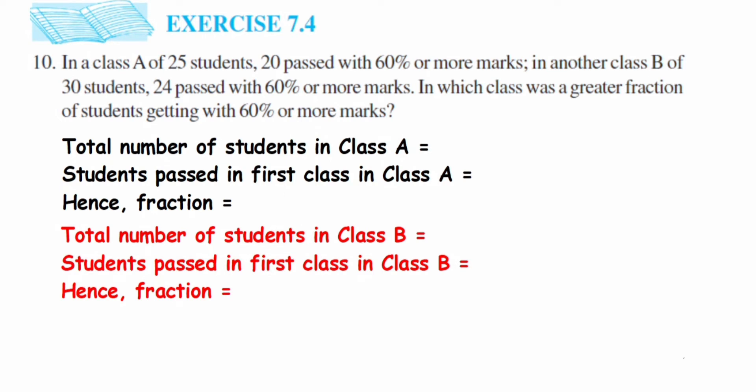I have already written statements here talking about the two classes, Class A and Class B. In Class A there are total 25 students, and 20 passed. In case of Class B there are 30 students, and out of this 30, 24 students passed with 60% or more marks.